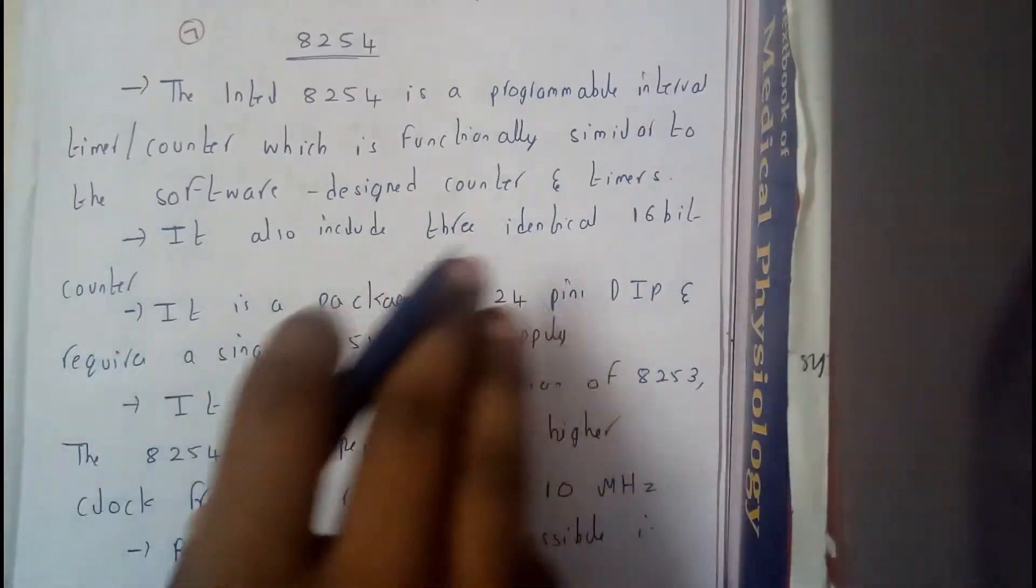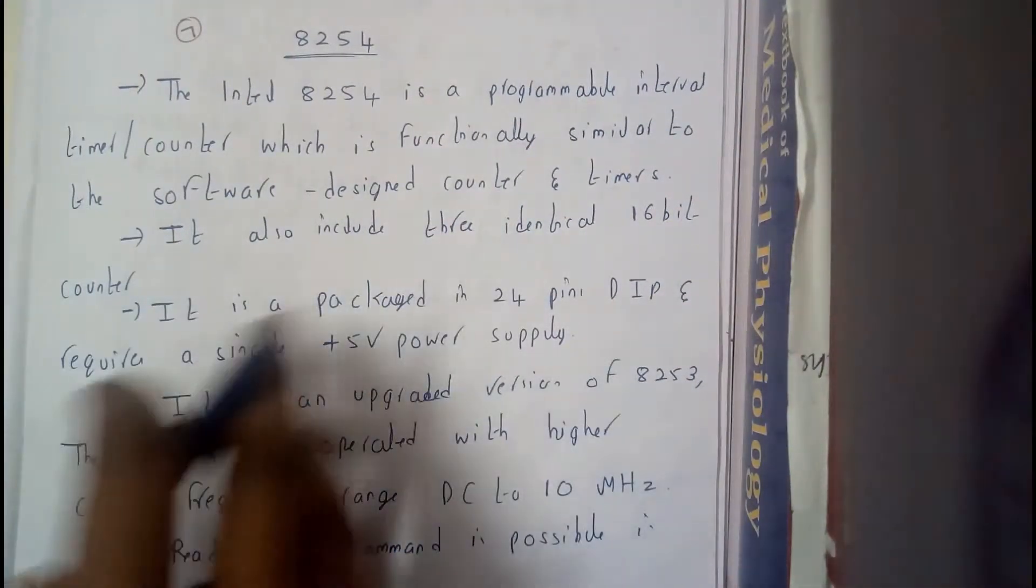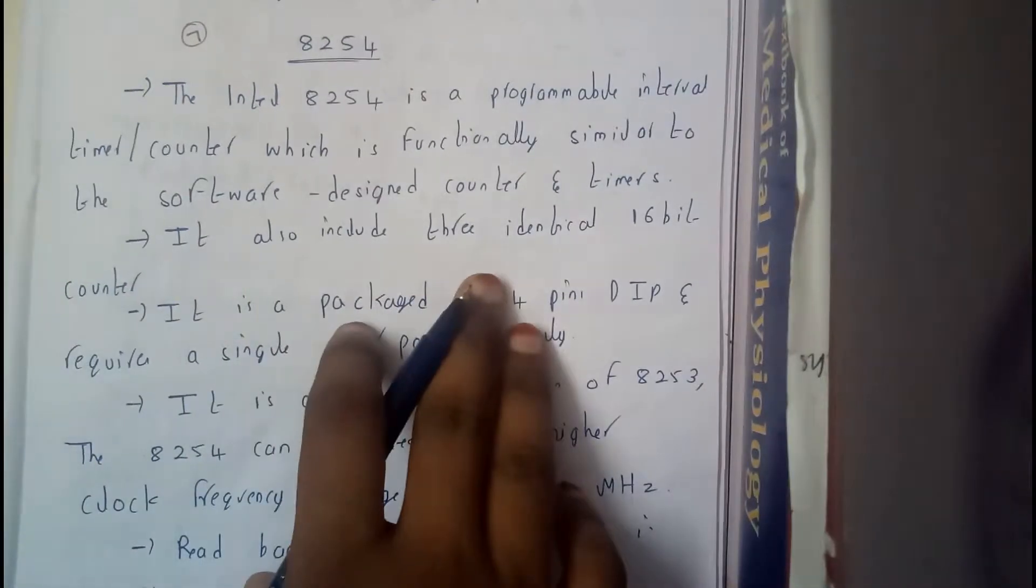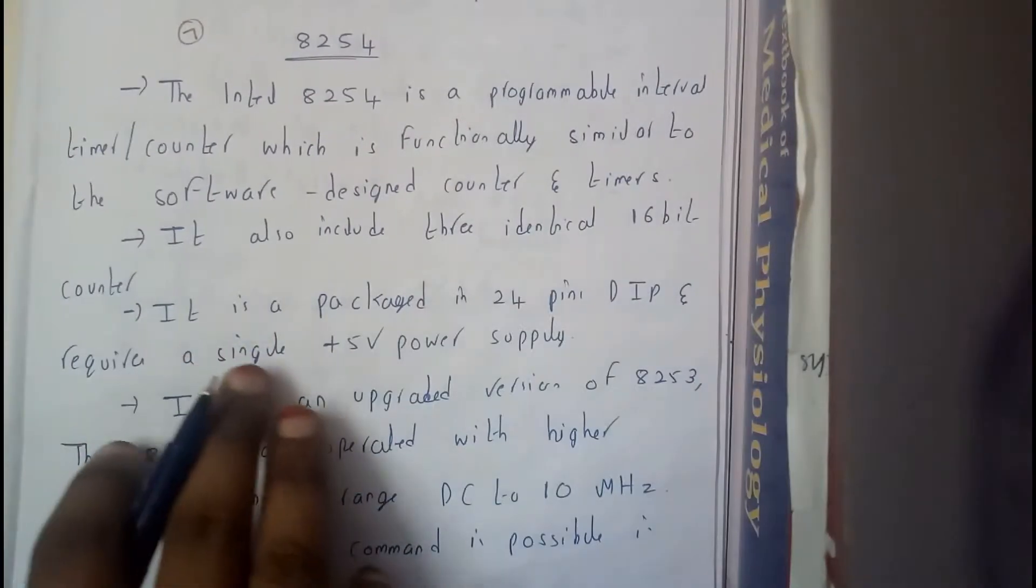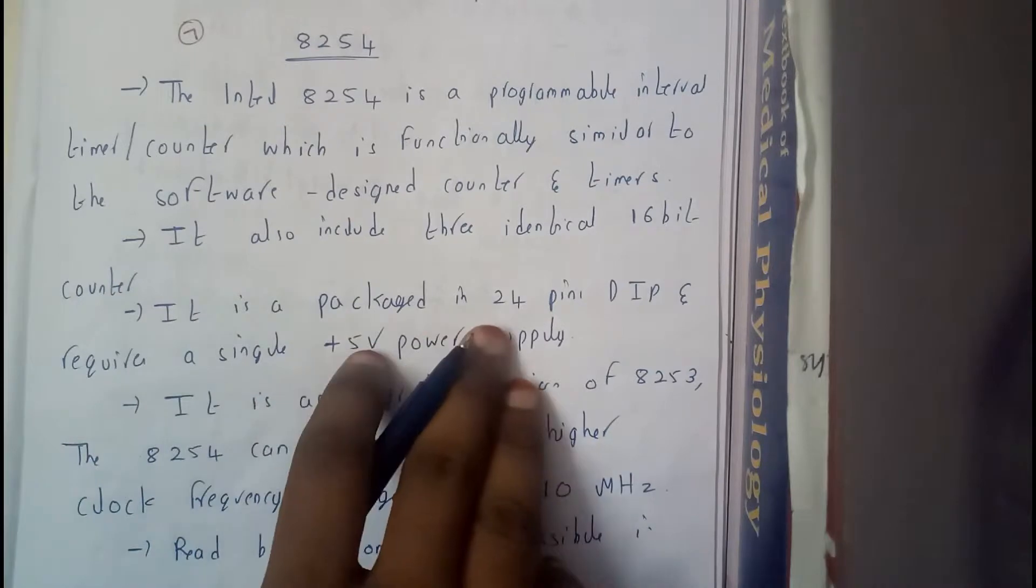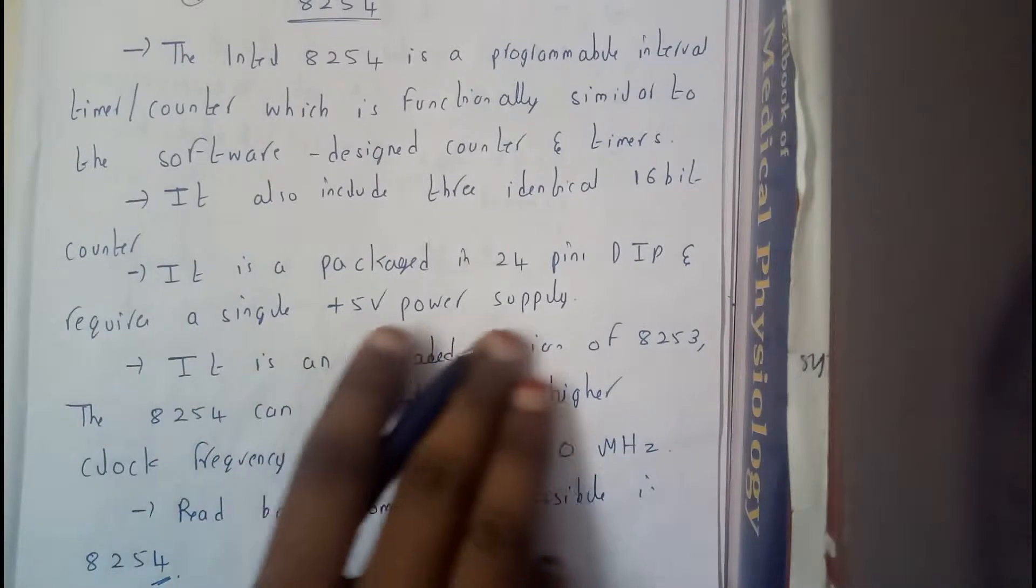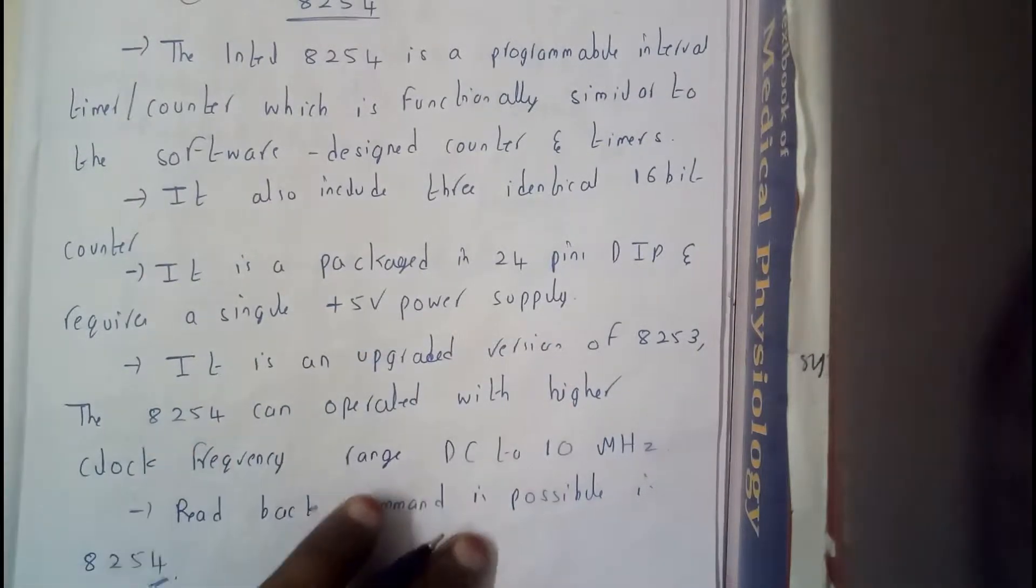So what does a counter or timer do? It counts the things that we do, our timer is something like a countdown. So it also includes 3 identical 16 bit counters and it is a 24 pin DIP package requiring a 5 volt power supply. So it is almost similar to 8253.